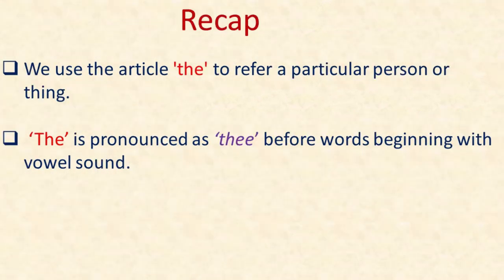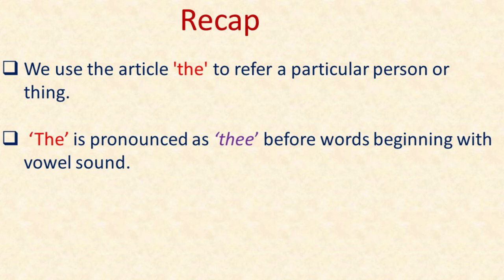Now let's do a quick recap. We use the article 'the' to refer to a particular person or thing. 'The' is pronounced as 'thee' before words beginning with a vowel sound.